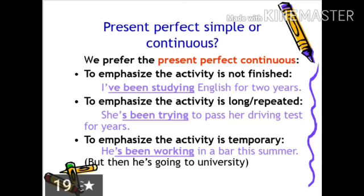We prefer present perfect continuous to emphasize that the activity is not finished, for example, I have been studying English for two years. Also to emphasize the activity is long or repeated, for example, she has been trying to pass her driving test for years. Also to emphasize the activity is temporary, for example, she has been working in a bar this summer but then she is going to university. That's all with the topic, students — I hope you all understood the topic.